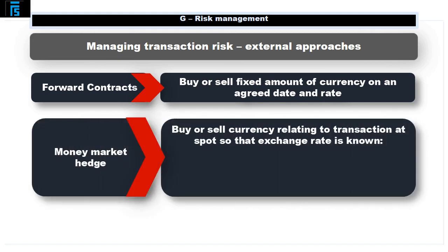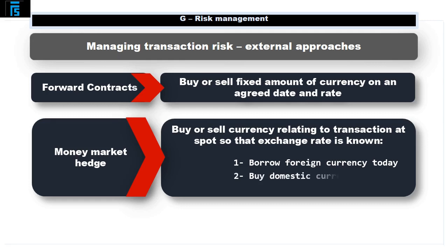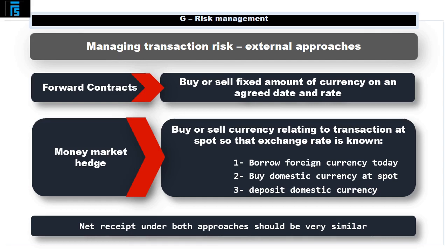A money market hedge involves buying or selling the currency relating to the transaction now at spot, so that the exchange rate achieved is known. More specifically, for a currency receipt, the process is as follows: borrow an amount of foreign currency today equal to the amount due to be received less the interest that will accrue on the borrowing; use the currency borrowed to buy domestic currency at spot; and deposit the domestic currency acquired for the period up to the date of receipt of the transaction currency. This will earn interest to offset part of the cost of the currency borrowing. The net receipt under both approaches should be very similar.